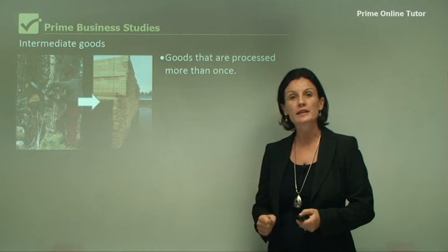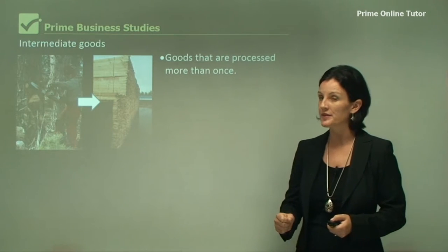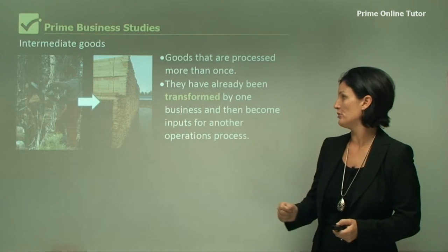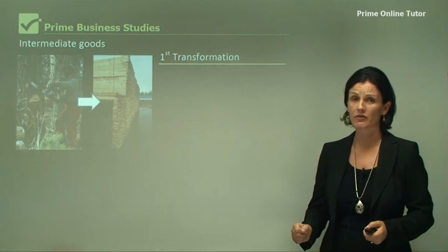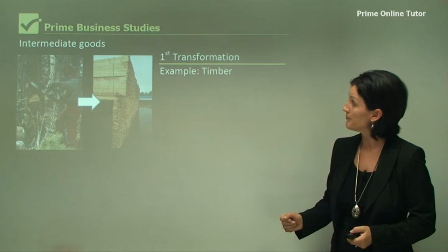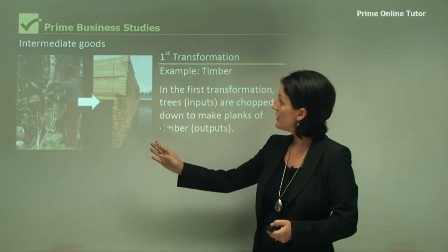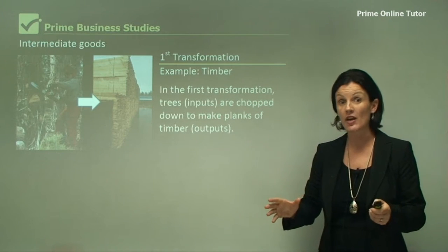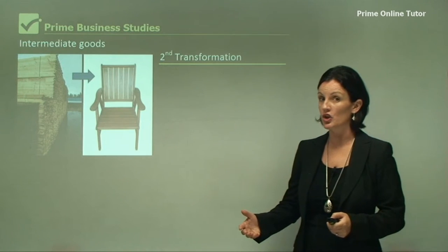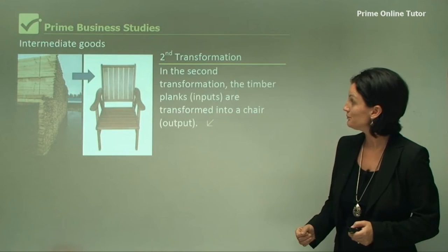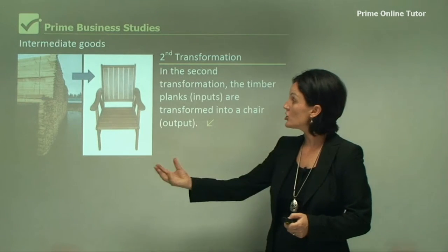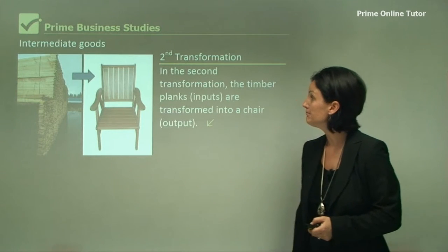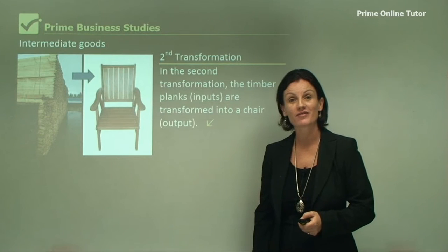Our next type of good is called intermediate goods. These are goods that are processed more than once — they've already been transformed by one business and then become inputs for another operations process. For example, a timber yard cuts down trees and transforms them into timber planks; that is their output. A second business then buys those timber planks as their input and transforms them into a finished product, such as a chair. That finishes our lesson on goods in different industries. See you next time.